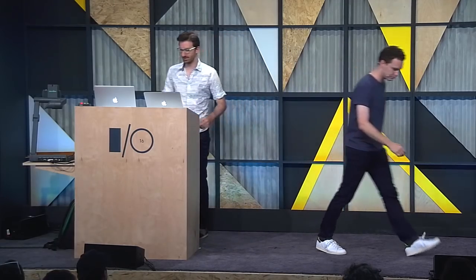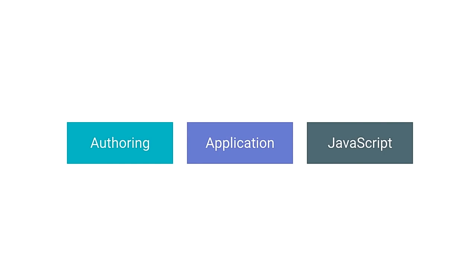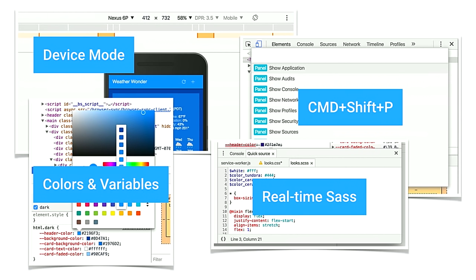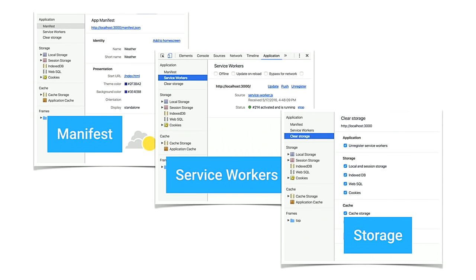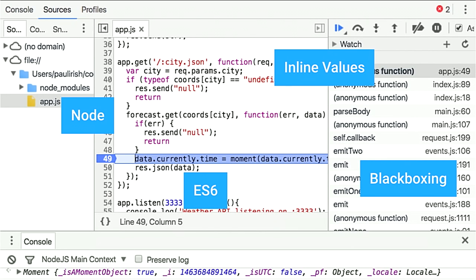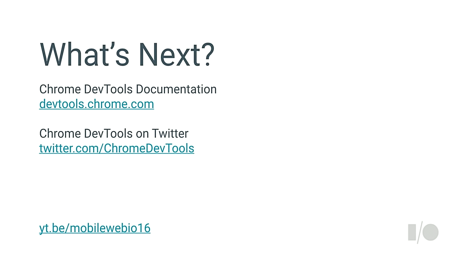It's just so much faster to debug both environments with this combined and integrated support. I'd like to thank all the teams who helped work on this. You can get access to it on a special build now, and we're crossing our fingers that the pull request is accepted by Node. A brief wrap up: we talked about authoring, application, and JavaScript — device mode, Command Shift P, colors and CSS variables, realtime SAS authoring, manifest, service workers, storage, Node.js debugging with inline values and ES6, and Lighthouse. Check out our documentation, follow us on Twitter at Chrome DevTools, and enjoy the show. Thank you.